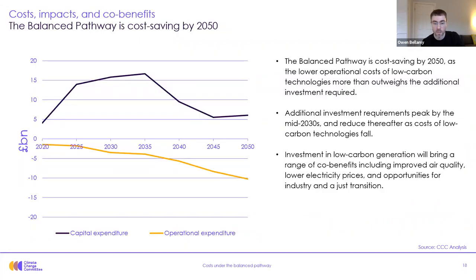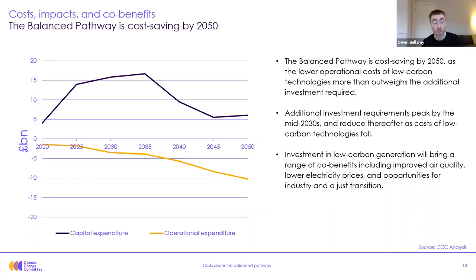In terms of aggregate costs for electricity generation, this slide shows the additional investment costs in the dark blue line and the additional operating costs in the yellow line of moving to net zero compared to running a fossil fuel based power system. Investment costs peak in the early to mid 2030s, particularly as we're expanding supply while technology is still being deployed and costs are still coming down. Investment costs then fall from the mid 2030s onwards as the cost of those technologies starts to fall once deployed at scale.